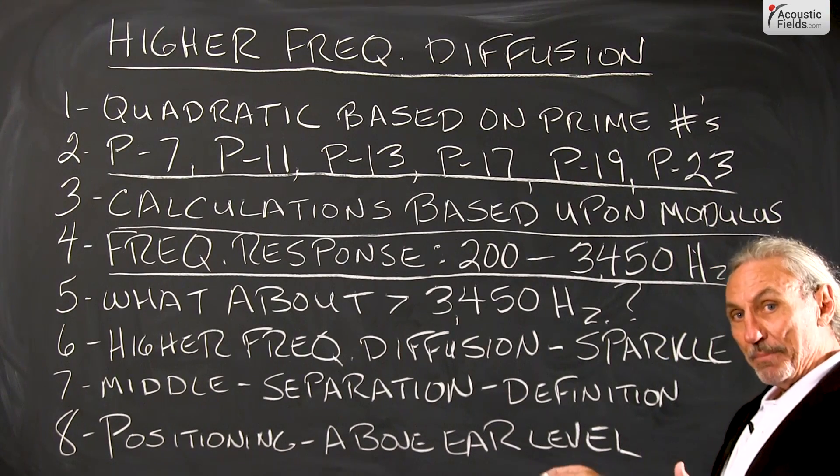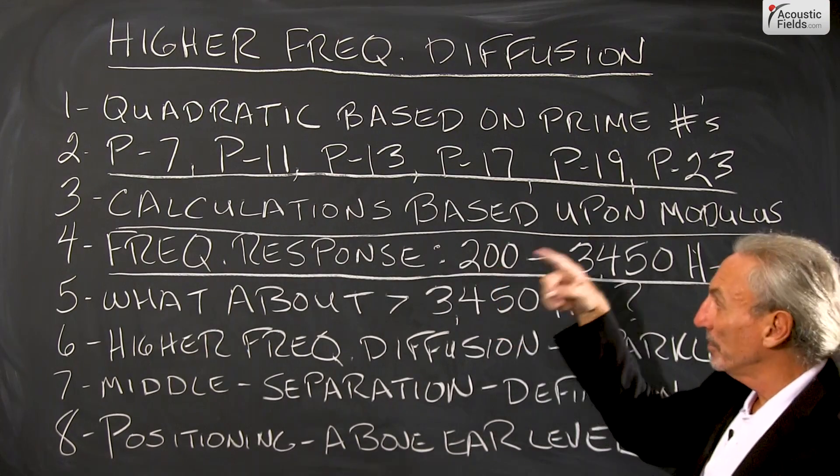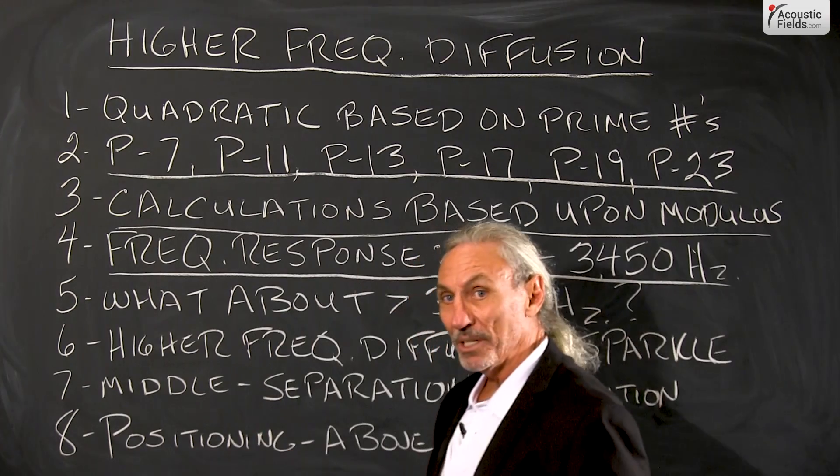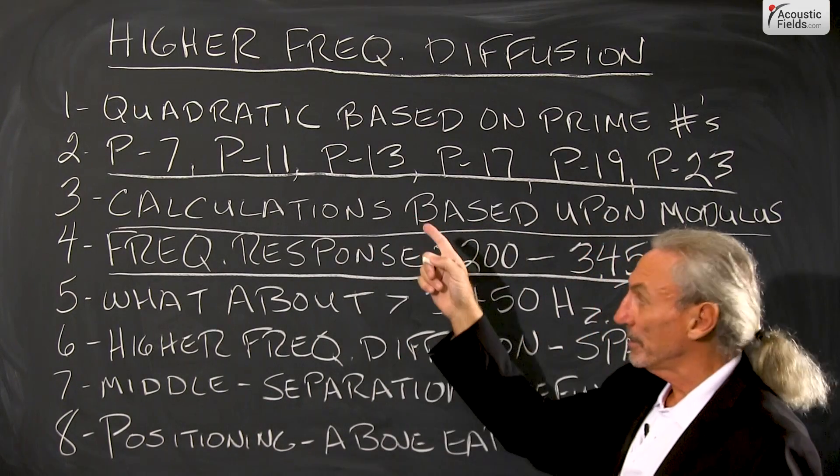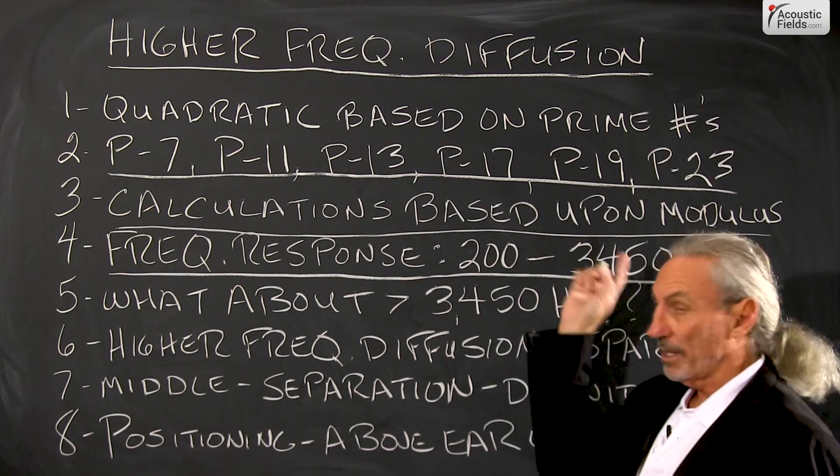So the deeper the diffuser, the lower the frequency response. So as a general rule, the difference between a 7, 11 and a 13 is about one octave between a 7 and 11, another octave between 11 and 13. So it diminishes after you get a little bit higher up in the prime numbers.